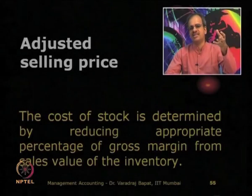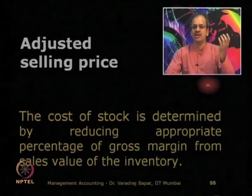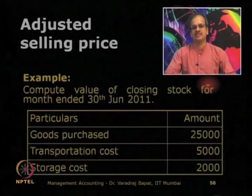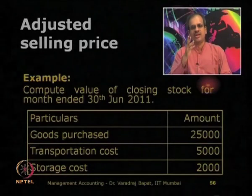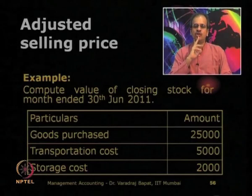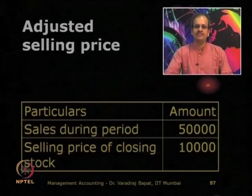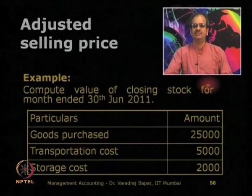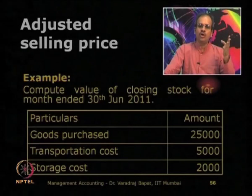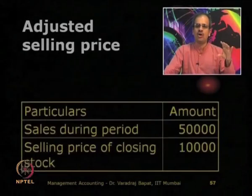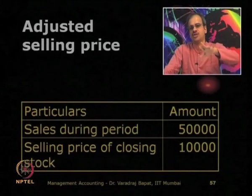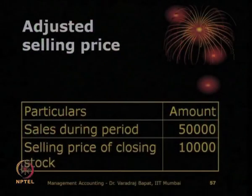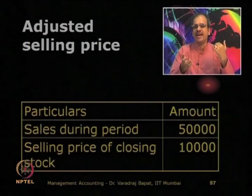What is done is you know the market price, you reduce the profit margin, which gives you the cost. For example: you are given goods purchase, transport cost, storage cost, sales, and selling price of the closing stock. You know that your total cost is ₹25,000 + ₹5,000 + ₹2,000, and out of these your sales are ₹50,000 plus you have a closing stock with selling price of ₹10,000. You cannot show the value at ₹10,000 because that is a selling price.